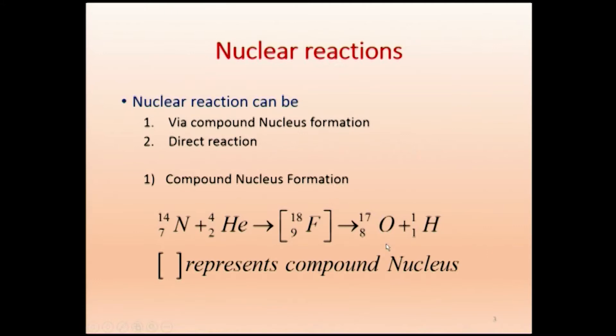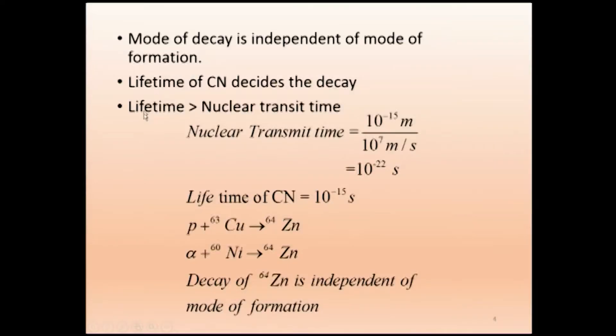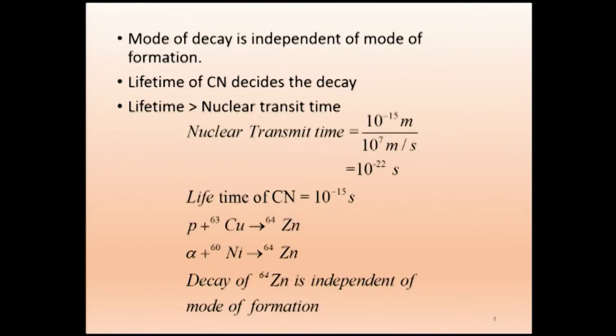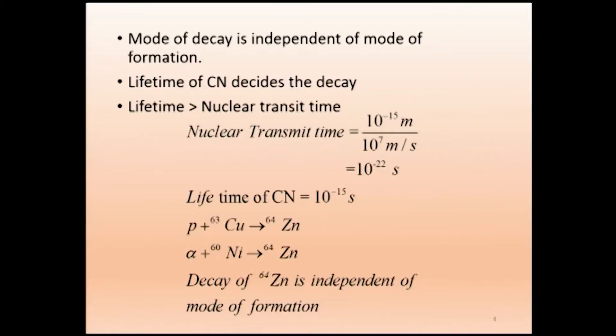The lifetime of the compound nucleus (CN) decides the decay. The compound nucleus has its own lifetime depending on its energy levels. This lifetime is greater than the nuclear transit time — the time required for the incident particle to cross the diameter of the target nucleus. For example, alpha bombarding nitrogen-7: the nitrogen nucleus has some radius, and the transit time is roughly the diameter divided by the velocity.